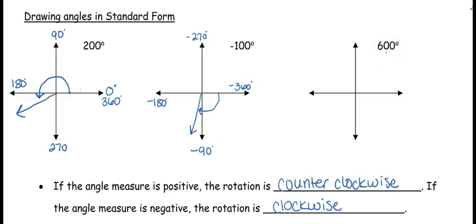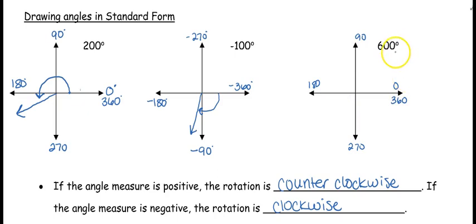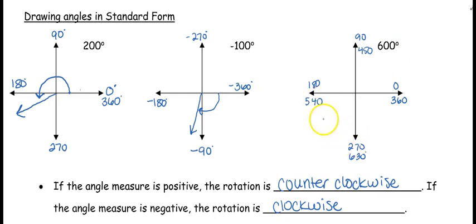Our last one is 600 degrees. It's positive, so we're going to go counterclockwise. We start at 0, 90, 180, 270, 360. When I go all the way around my circle I haven't hit 600 yet, so I keep going. Each quadrant is 90: adding 90 to 360 gives 450, another 90 gives 540, another 90 gives 630. I only want 600, so 600 is 60 degrees past 540, or 30 degrees shy of 630. So I know I'm going to end up right about here.